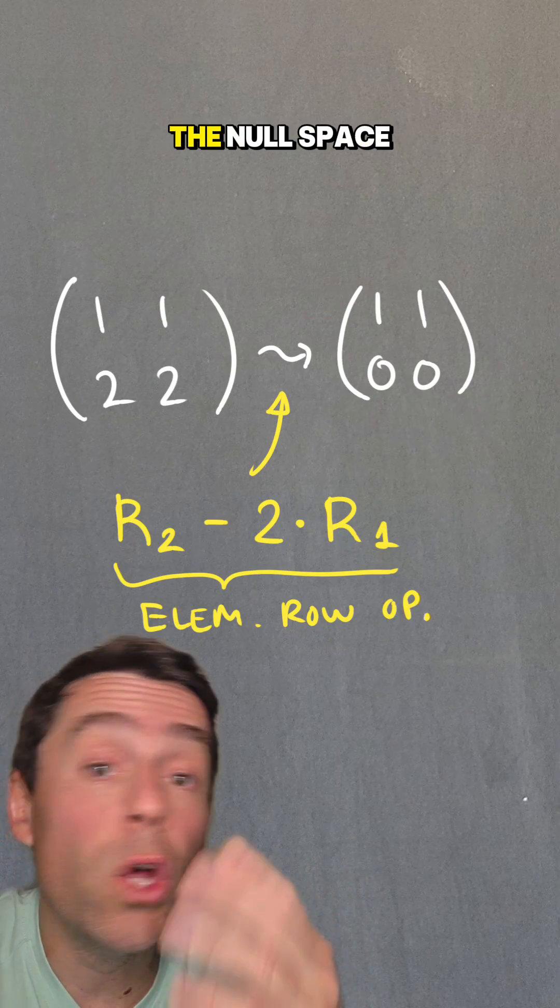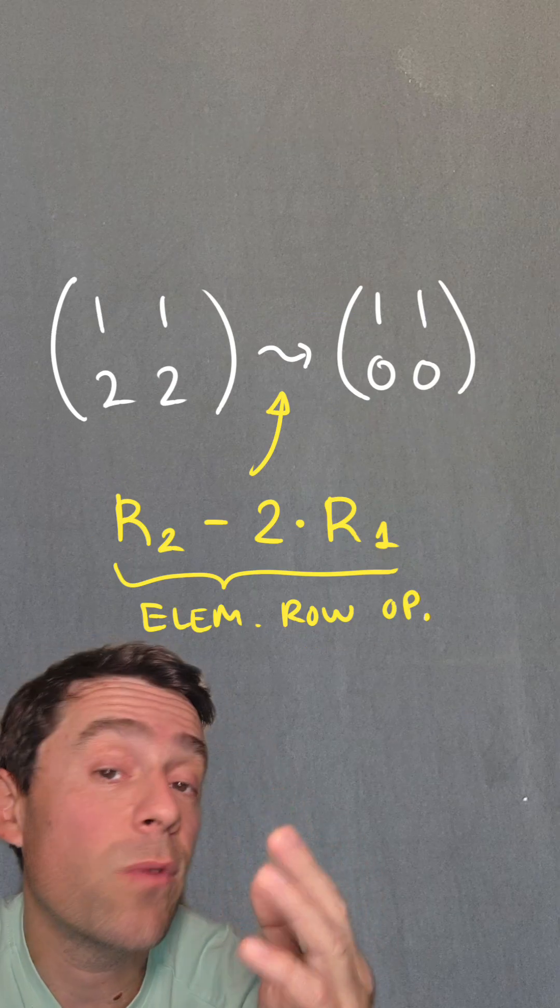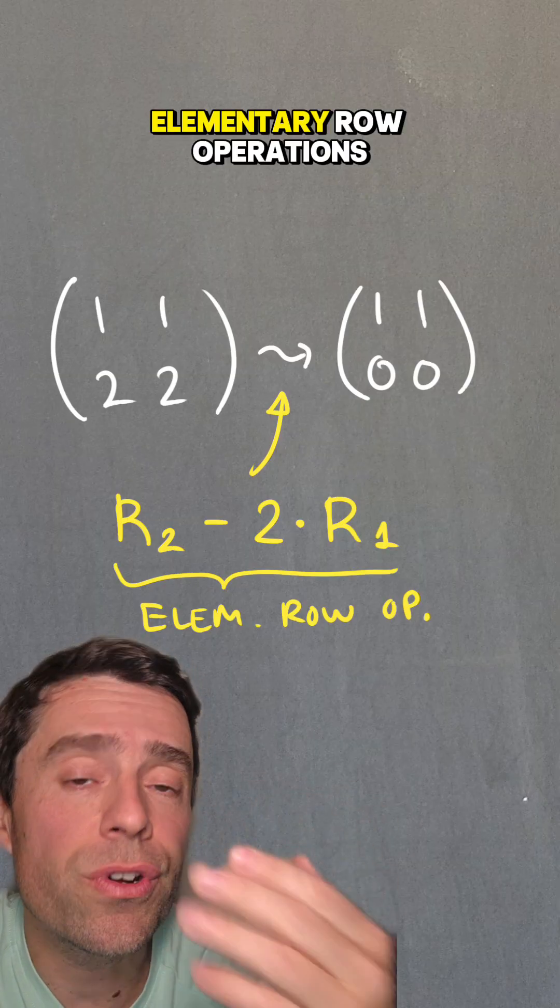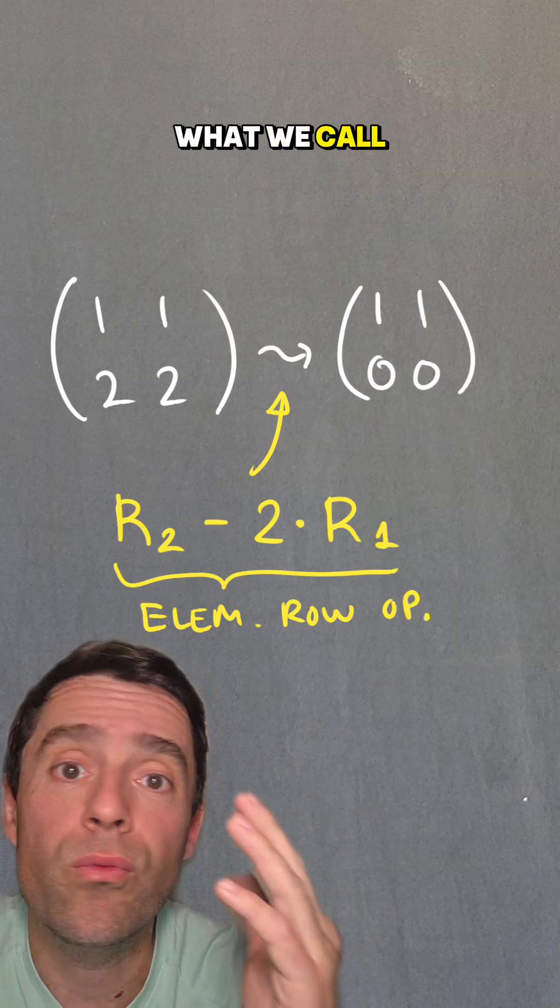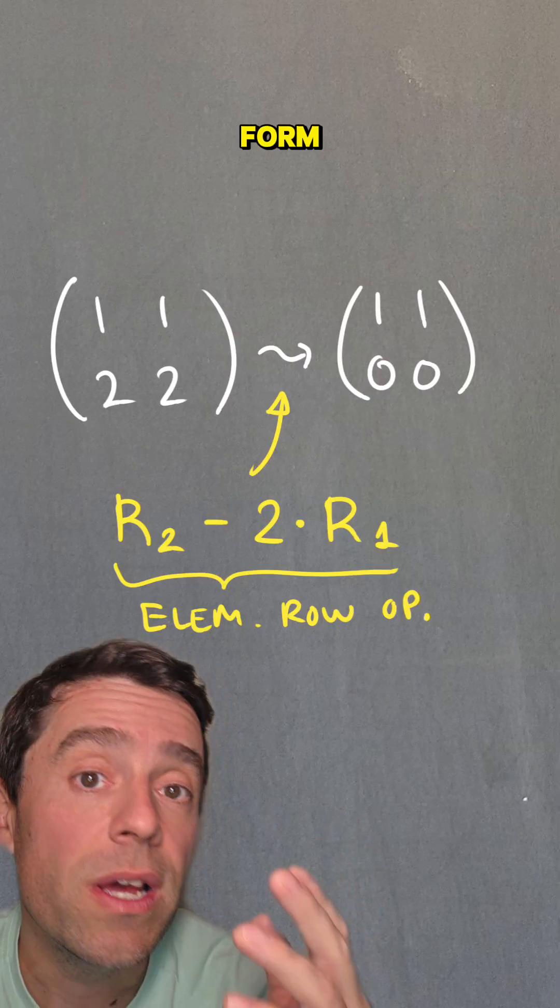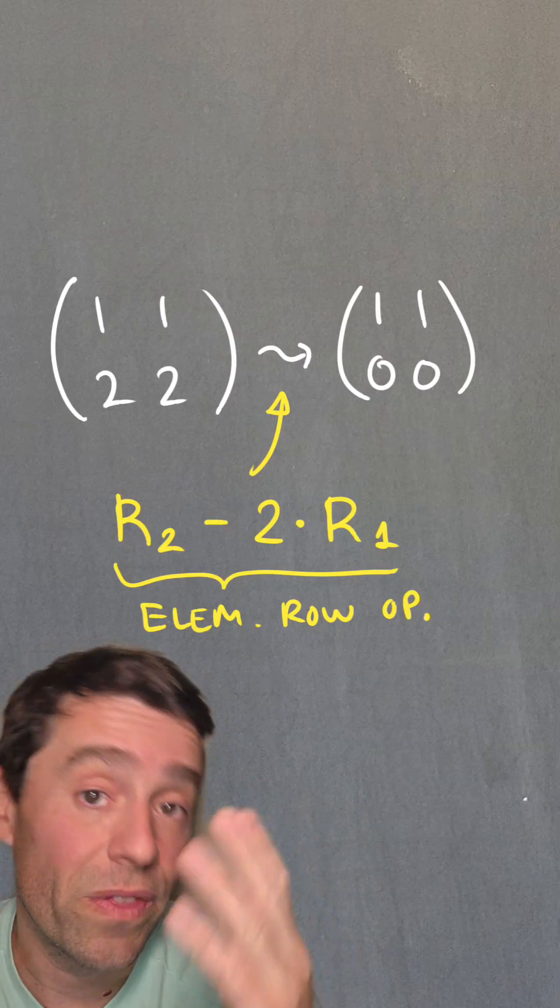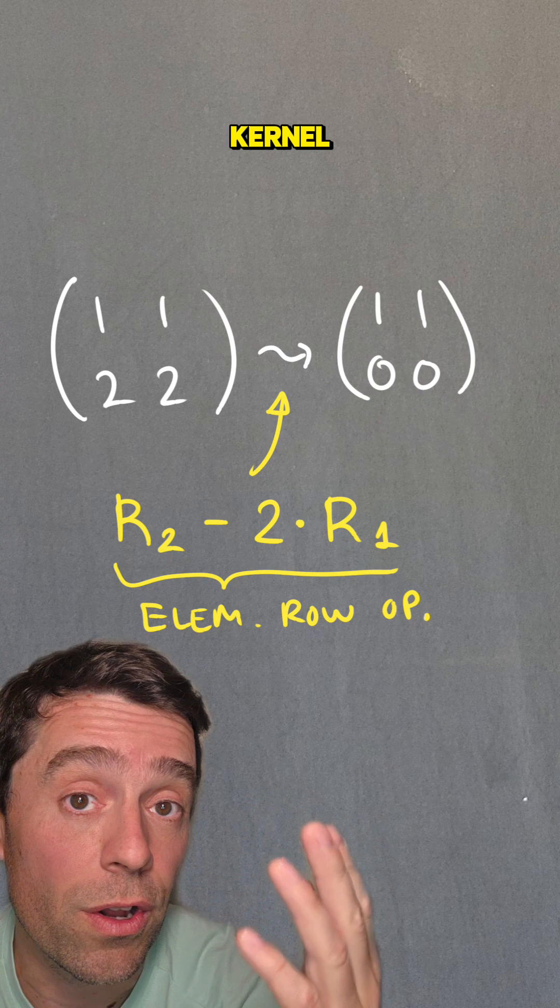So if I want to compute the null space of a matrix A, then what I do is elementary row operations until I reach a matrix that is in what we call row reduced echelon form, which are the easiest to tell what the solutions of those matrices are for the kernel.